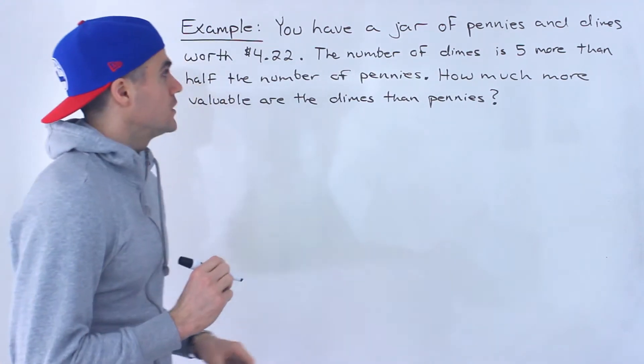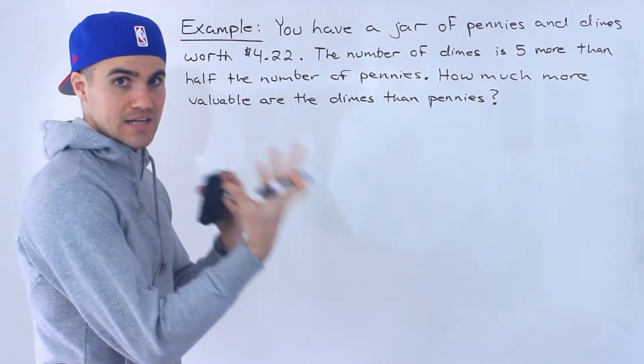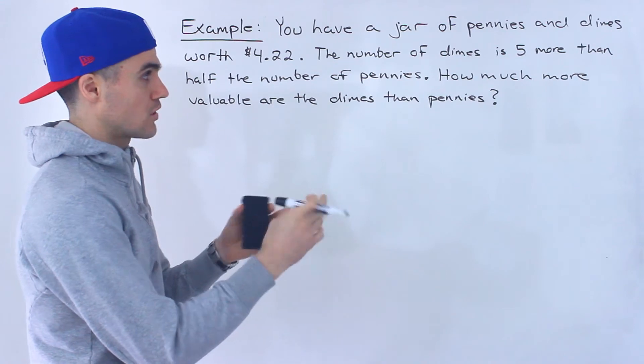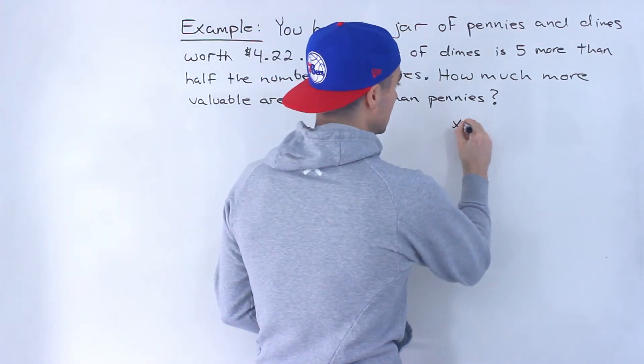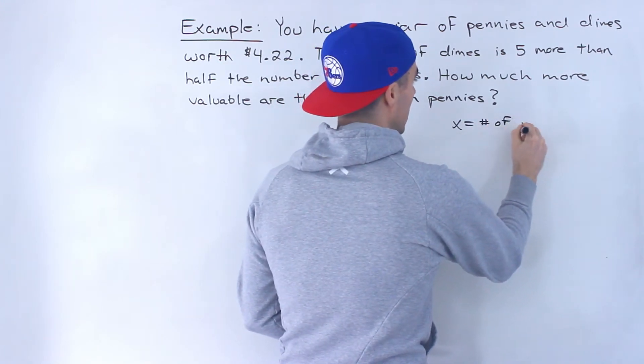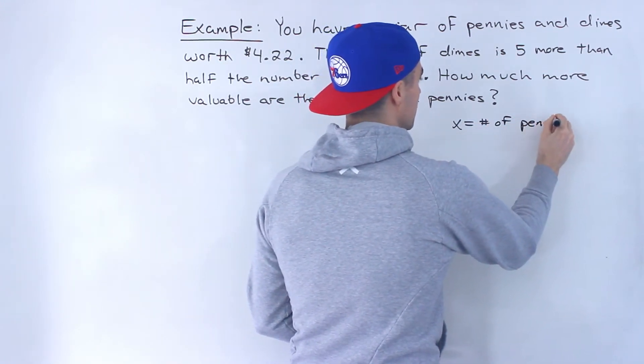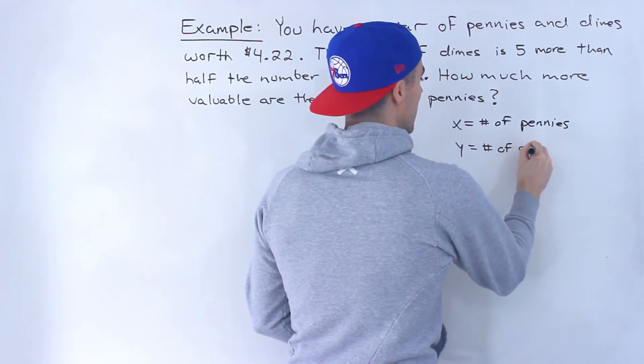First thing I'm going to do in this question is figure out how many pennies and how many dimes there are in the jar, the number of each. If we introduce some variables here, we can let x equal the number of pennies and then we can let y equal the number of dimes.